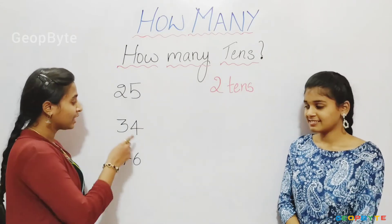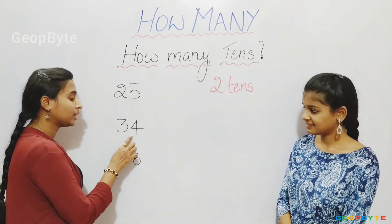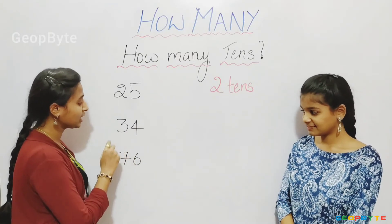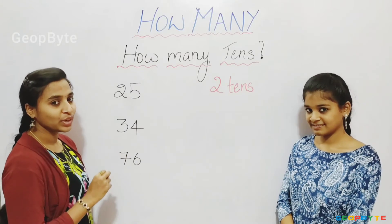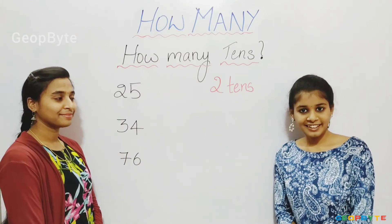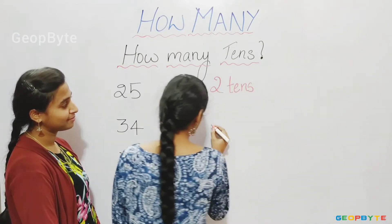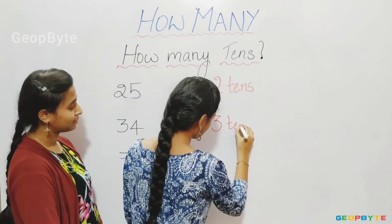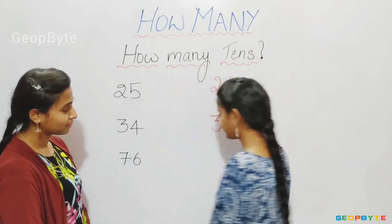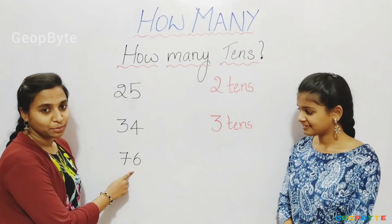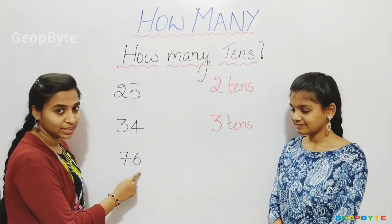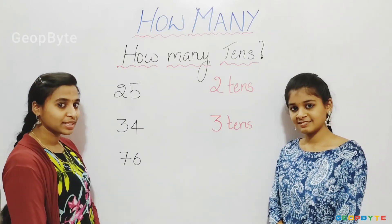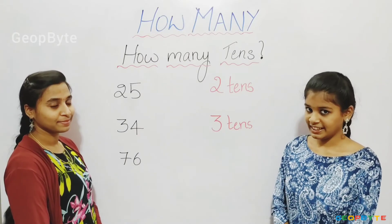Similarly, in this number 34, 4 is in the ones place and 3 is in the tens place. That is 3 tens are there. Let us write 3 tens. See this number similarly — 6 is in the ones place and 7 in the tens place. That is 7 tens. Let us write 7 tens.